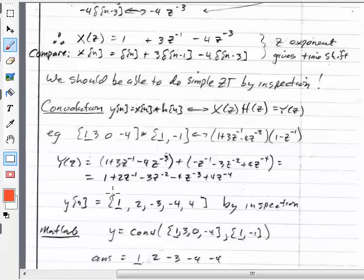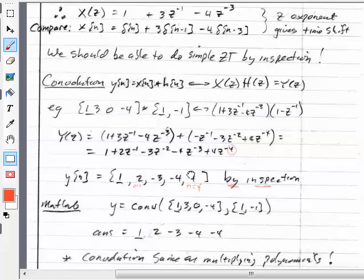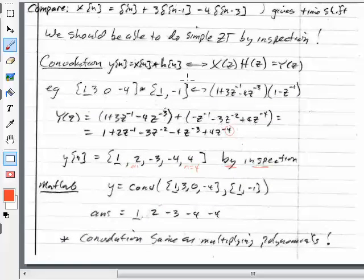Well, now I can take the inverse Z-transform by inspection. Okay, because 1 transforms into a 1 at the origin. 2Z to the minus 1 is a 2. It occurs at N equals 1 because of that. Okay, there's the N equals 1 term. Minus 3Z to the minus 2 is a minus 3 that occurs at the time step N equals 2. And we got minus 4Z to the minus 3 shows up there. 4Z to the minus 4 shows up there. So the exponent tells us the time location N equals 4 corresponds to that number, not including the minus sign. So that's a nice way to do, a simple way to do convolution.